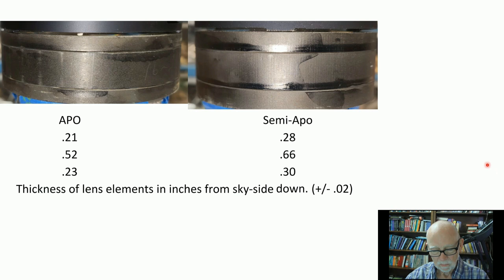Here's a picture just to prove that the lenses are not identical, the apo and the semi-apo. The apo has different thicknesses. The overall lens on the semi-apo, the overall lens triplet, all three elements together, is a bit thicker than the apo.